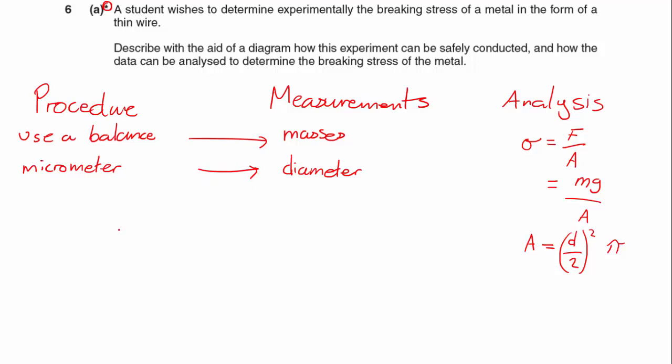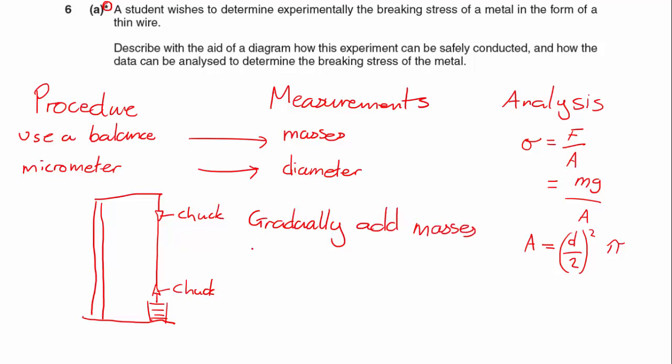Now I've got something in all three of them. The question itself does say to draw a diagram, so what I would do is - you have to excuse my bad drawing on this tablet - I would have my wire connected via a chuck something like that, and here I would hang my masses off. I would attach the wire using a chuck, and I would say then gradually add masses on until the wire breaks.